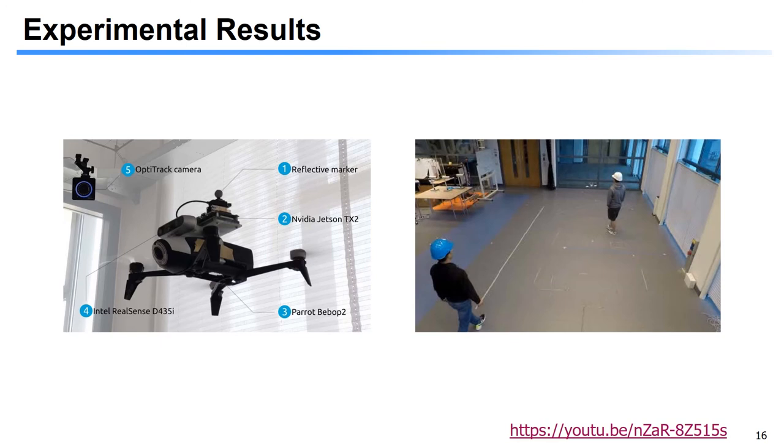Now we show our experimental results. In order to obtain some quantitative results, we use an external motion capture system, the OptiTrack, to measure the position of the MAV and moving obstacles, which is only used as ground truth data. In the scenario shown in this slide, the MAV was flying around two walking human obstacles.